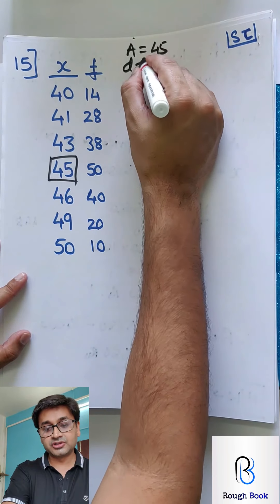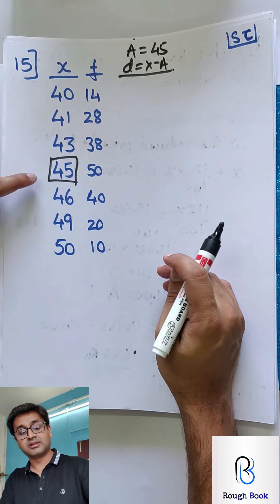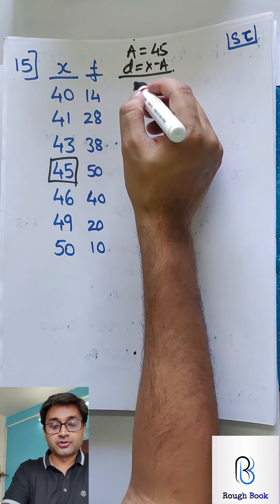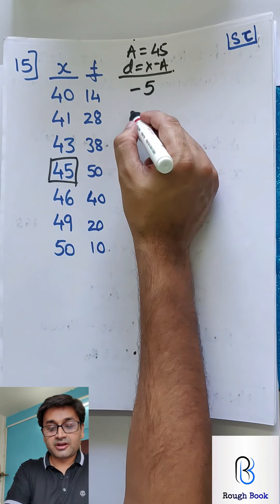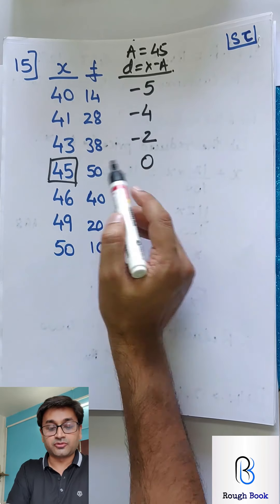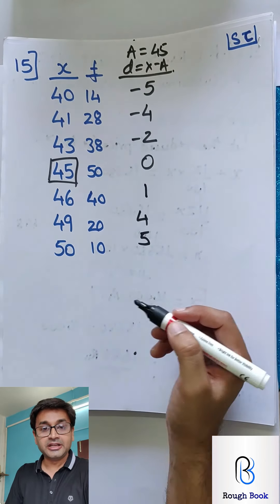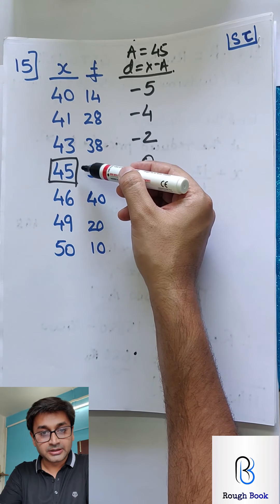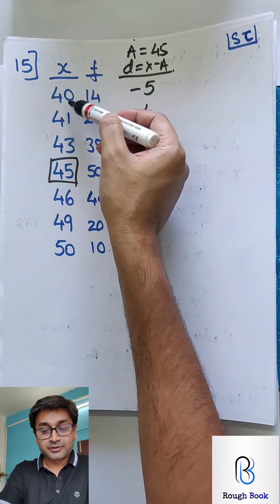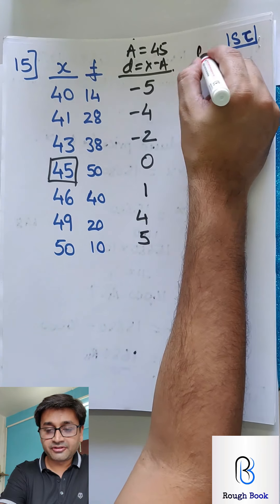We create a new column D which is X minus A. X is this column's value for each row, and A is 45 for all rows. So the first one is 40 minus 45 equals minus 5; 41 minus 45 equals minus 4; then minus 2; then 45 minus 45 equals 0; then 46 minus 45 equals plus 1; and so on. That is how I created the D column — by assuming the mean and subtracting A from each X value.